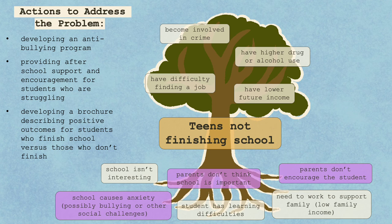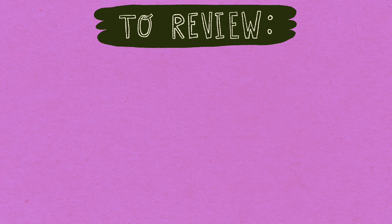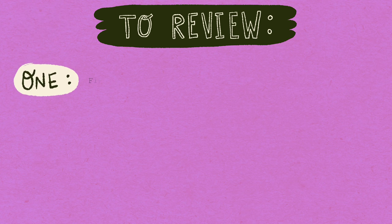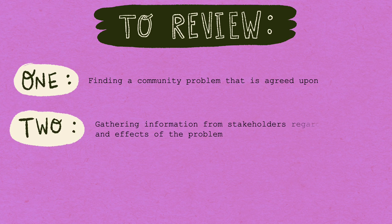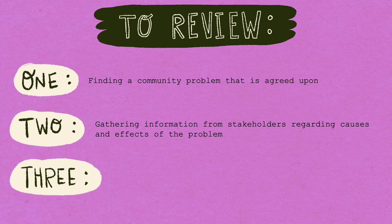And this is how to use a problem tree with your students. To review, a problem tree analysis involves: 1. Finding a community problem that is agreed upon — this could be the result of classroom discussion or a community survey. 2. Gathering information from stakeholders regarding causes and effects of the problem. And 3. Developing a list of possible actions.